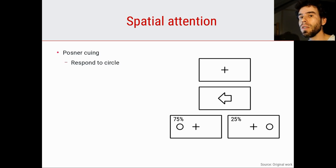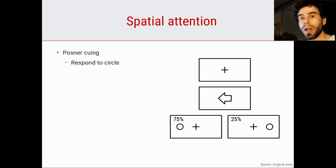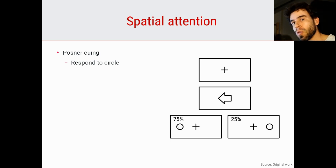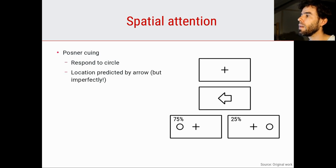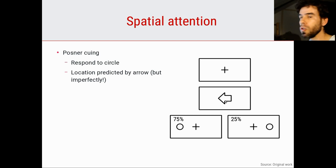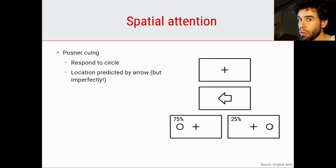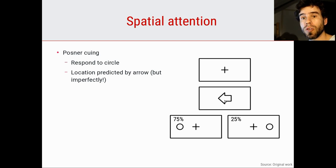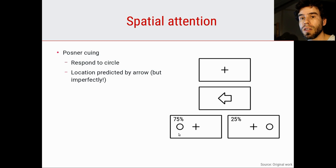The task for the participant in this paradigm is to respond to the circle — the circle here at the bottom. The participant has to press the space bar as soon as the circle appears, or indicate whether the circle is on the left or right side, or maybe indicate the color of the circle. The exact task doesn't really matter as long as the participant has to do something with that circle. The location of the circle is predicted by this arrow cue in the center. If the cue points towards the left, the circle will also with 75% probability appear on the left, and on 25% of the trials it will appear on the other side.